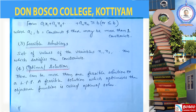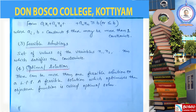Under LPP there are four ingredients. First is the objective function. Second is the linear constraints. Third is the feasible solution. And now the fourth is the optimal solution. By using these four ingredients, we can represent the standard form of a mathematical model of LPP.